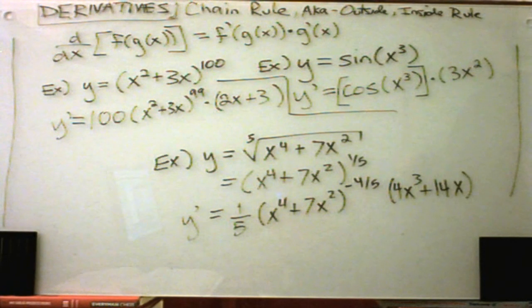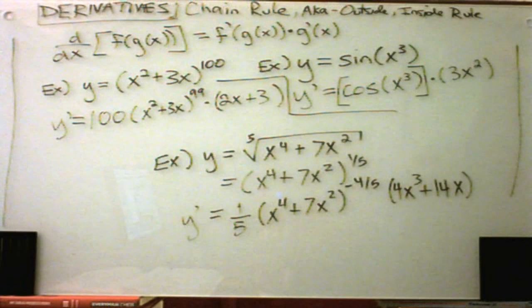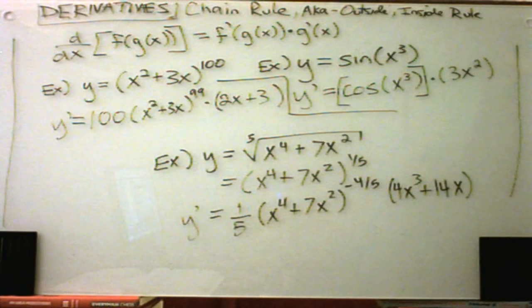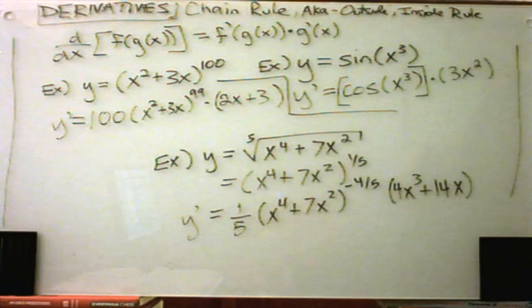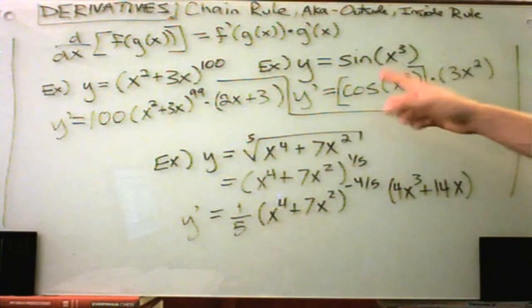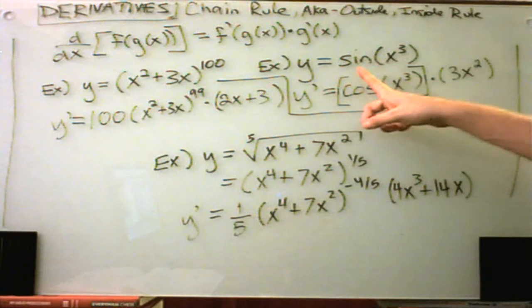It can definitely get long and tedious. But again, when you're going through the process, just ask yourself, should I be using the product rule, the quotient rule, the chain rule? Maybe some combination of all three. And then just use your basic formulas. For example, the derivative of sine being cosine.